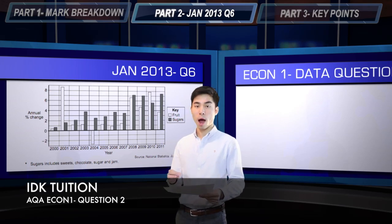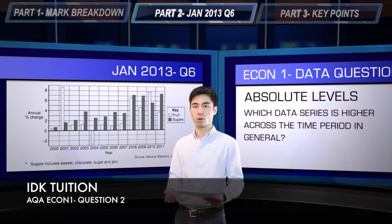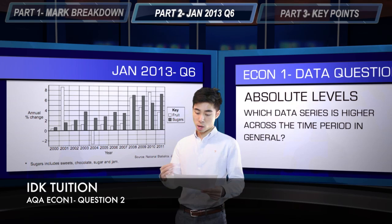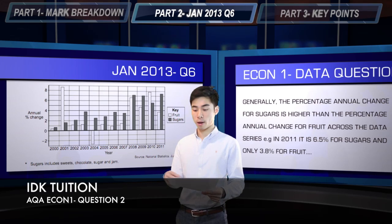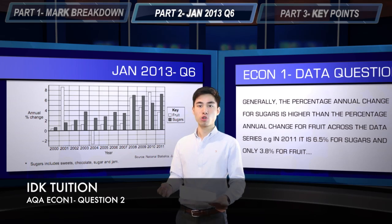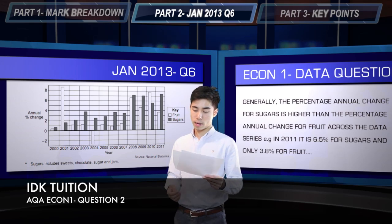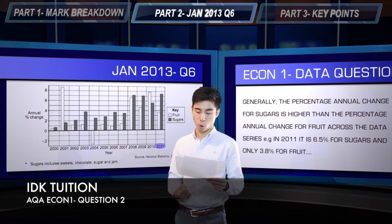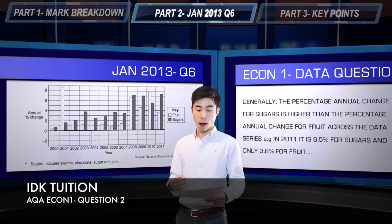The final point of comparison — to use only if peaks and troughs aren't readily identifiable and if you're struggling with trends — is absolute levels. Simply look across the data series and ask which is higher: fruit or sugars? It's quite obvious that the percentage annual change in sugars is higher than in fruit across the entire data series. For supporting evidence, you can pick out one year where this is the case — for example in 2011, the percentage increase for sugars is about 6.4-6.5%, whereas for fruit it's only about 3.8%.